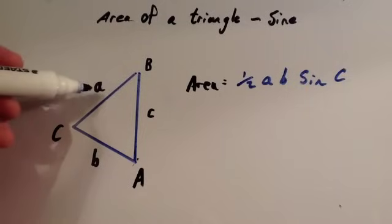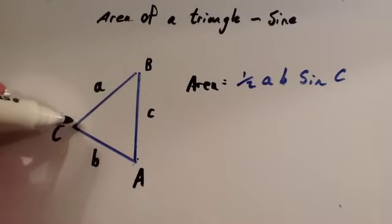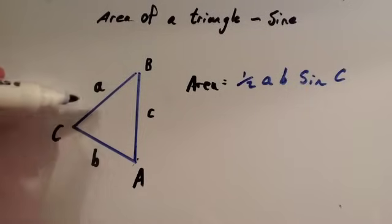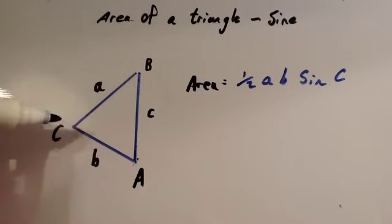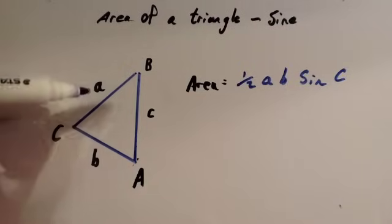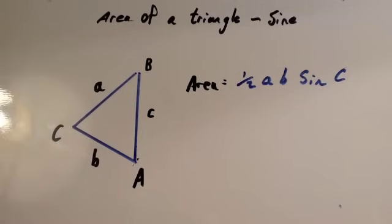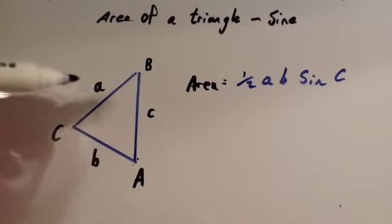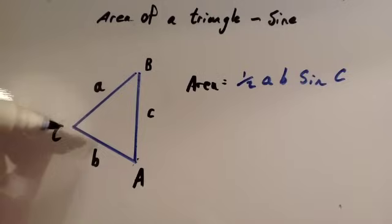So if you have this side and this side, and the angle in between it, or enclosed by it, you can times them together, half it, and multiply by the sine of C. Or you can multiply times by the sine of C and then half it, you can half it at any time really.